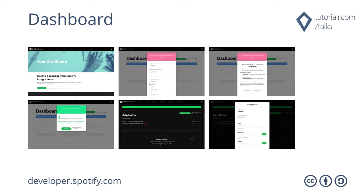Dashboard is where you create and manage Spotify integrations. You just need to log in with a Spotify account and agree to the terms and conditions. Then choose to create a client ID, create an app or hardware integration and state the purpose of the non-commercial integration, although Spotify can approve commercial integrations. Once done, you get a client ID and client secret to use with the Spotify API. You can also edit settings to set the redirect URI for authentication.